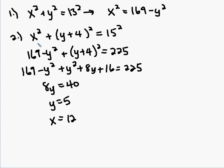So now that we have the two equations, we're going to substitute our value for x squared that we have from the first equation in for x squared. Now we have 169 minus y squared plus y plus 4 squared is equal to 225. Or 169 minus y squared plus y squared plus 8y plus 16 is equal to 225.